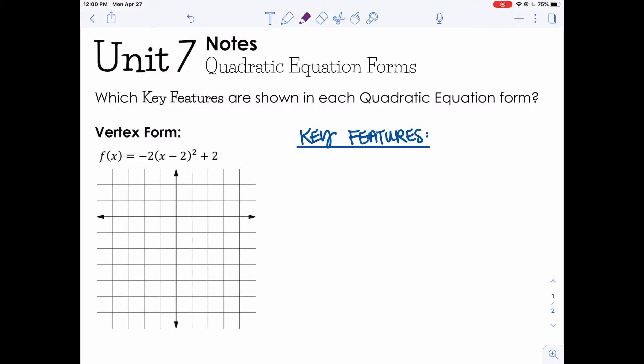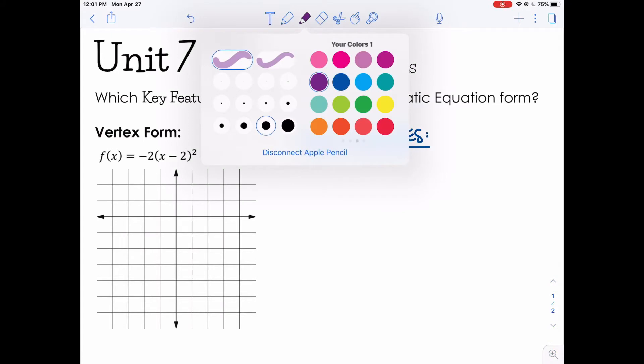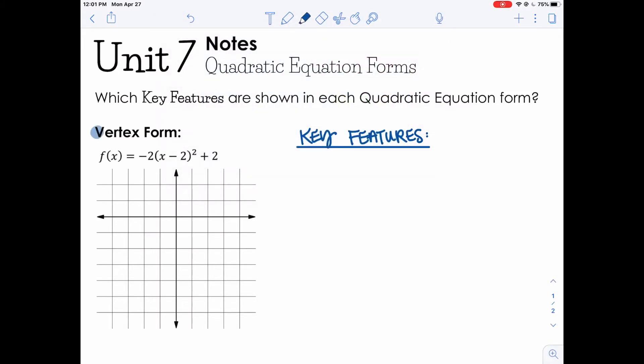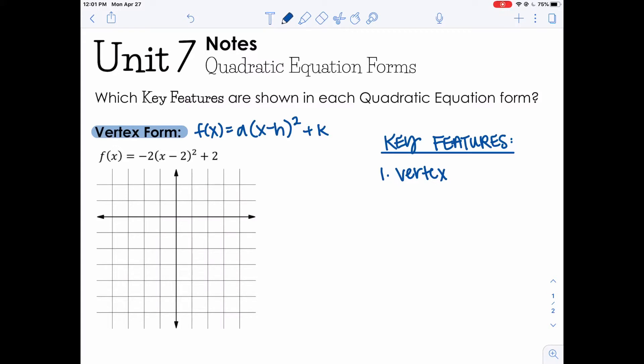So first let's start with something that's familiar, and that is vertex form. So vertex form, let's write the general form right here. So f(x) equals a times (x minus h) squared, and then on the end we add k. So what we know about vertex form is obviously that it gives us the vertex. So one of the key features is the vertex. Remember that the vertex comes from the point (h,k).